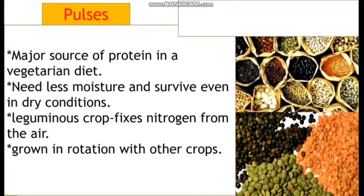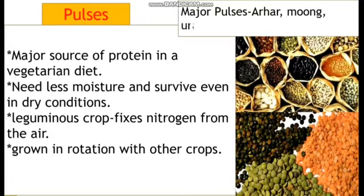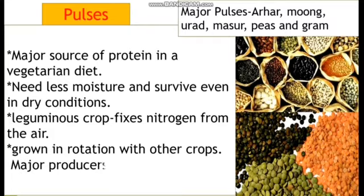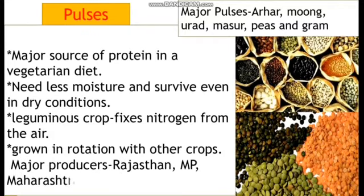Major pulses are Arhar/Tur, Moong, Urad, Masoor, Peas, and Gram. Major producing states are Rajasthan, Madhya Pradesh, Maharashtra, and Uttar Pradesh. Among pulses: Soybean, Black Gram, and Arhar are grown as Kharif crops; Green Gram as both Rabi and Kharif; and Masoor and Bengal Gram as Rabi crops.